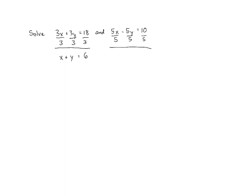So it's not just that we can multiply both sides by the same number. We can also divide both sides by the same number. This leaves us with x minus y equals 2.